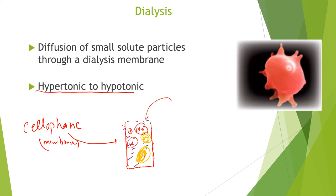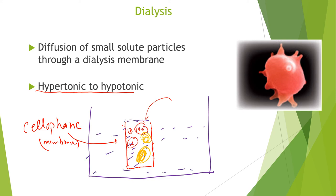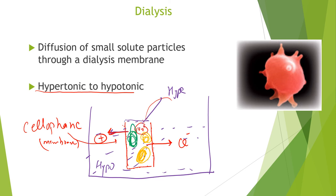If we place this cellophane bag in a large container of water, the outside is at low concentration — hypotonic — while the inside is hypertonic. The small ions such as sodium and chloride can diffuse out through the tiny pores, so sodium ions will come out and chloride will also move out. However, large colloids such as the proteins and other large particles will stay inside. This process separates tiny particles from large aggregates, and it is known as dialysis.